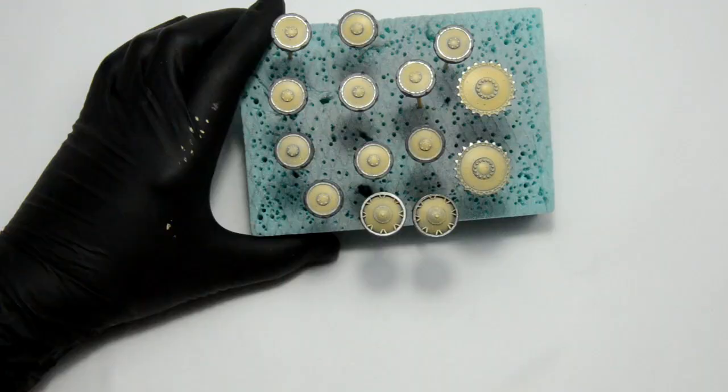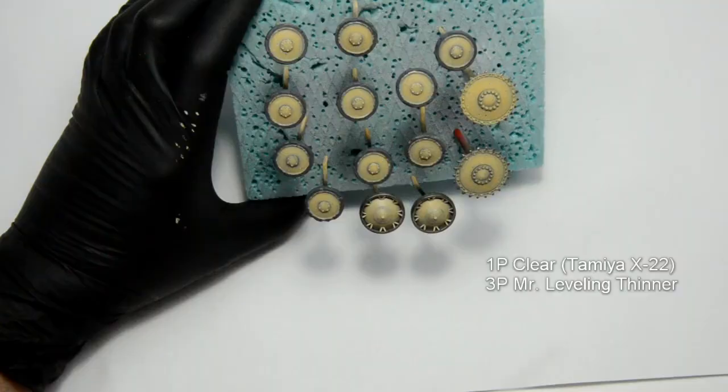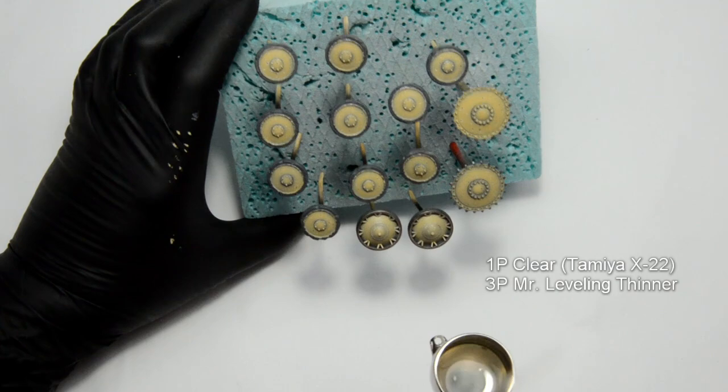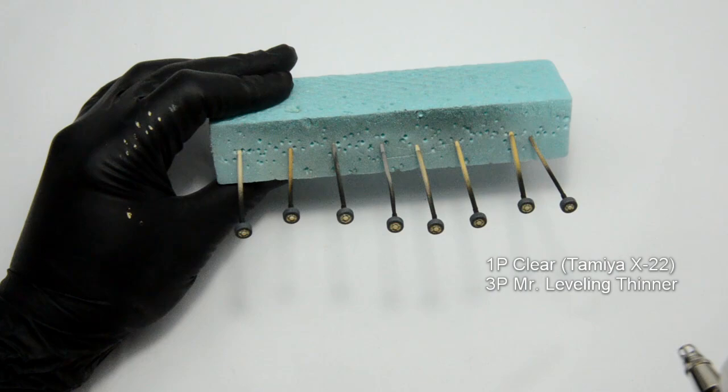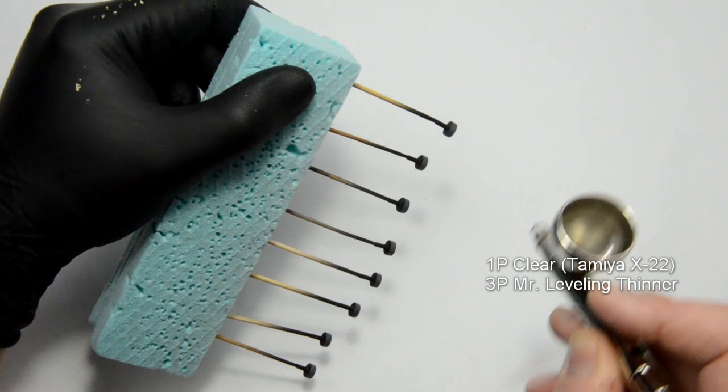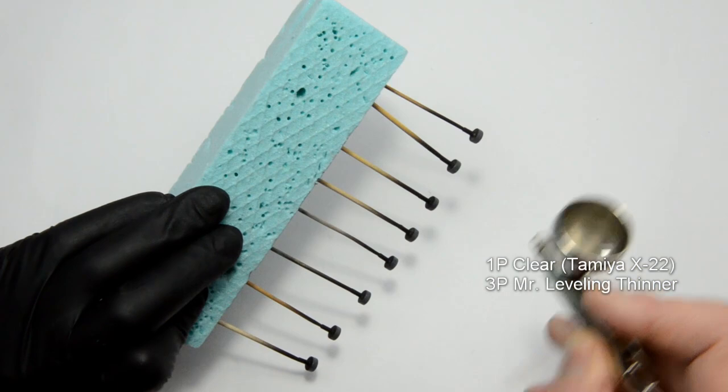Before I move to enamel washes and effects, I covered the entire model with two coats of Tamiya clear varnish. It was thinned with Mr. Leveling thinner in a one part paint, three part thinner ratio. This is a great step that will make the pin wash step a lot easier, but the glossy surface is not good for other effects. So I will advise you to do it immediately after the airbrushing of the base color. You know, before the chipping and all the detail painting. Later you will see why.